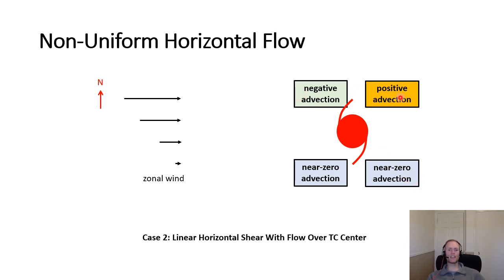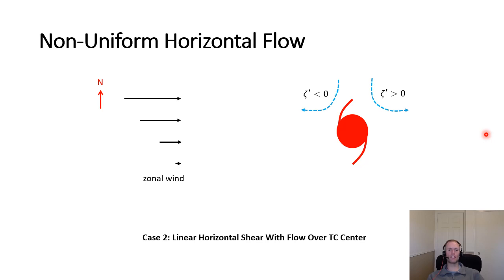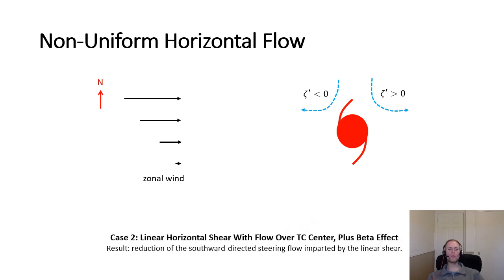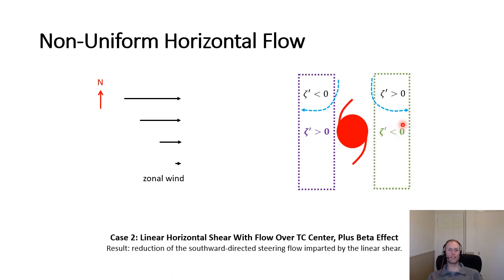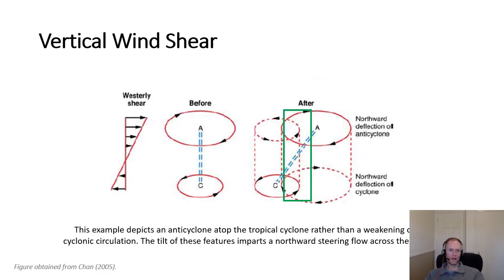The negative and positive advection anomalies produce their own flow anomalies — anticyclonic to the northwest and cyclonic to the northeast — imparting a southward directed steering flow across the cyclone in isolation. However, when the beta effect is introduced, the cyclonic vorticity tendency to the west and anticyclonic to the east counteract the signs of our anomalies, reducing that southerly steering component across the cyclone associated with just the nonlinear horizontal flow.